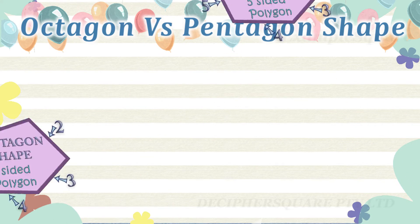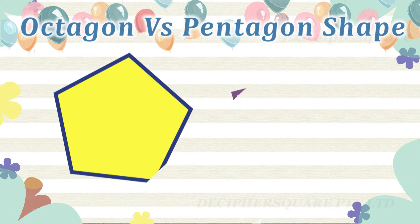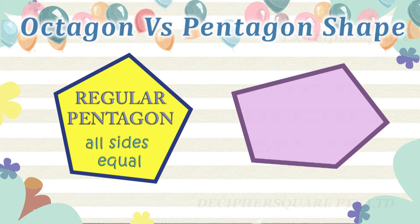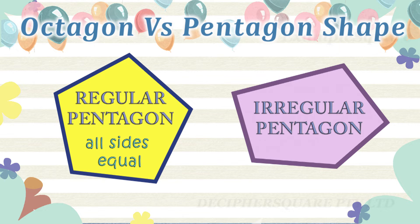If all the five sides of the pentagon are equal and all the five interior angles of the pentagon are equal, then it is a regular pentagon. Otherwise it is an irregular pentagon. Here is an example of a regular and irregular pentagon.